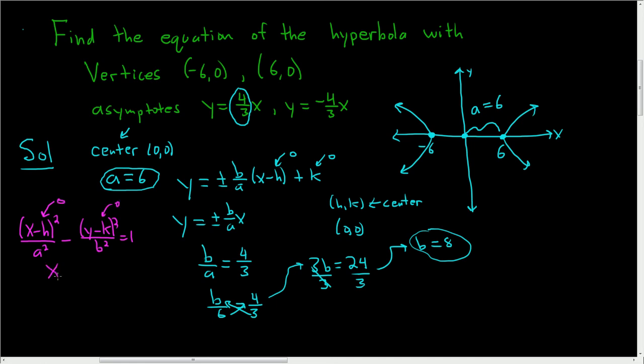So we end up with x squared over a squared. Well, a was 6, so 6 squared is 36, 36 minus y squared because k is 0 and then b was 8. So b squared is 8 squared, which is 64, so over 64, and this is equal to 1. And that is the final answer.